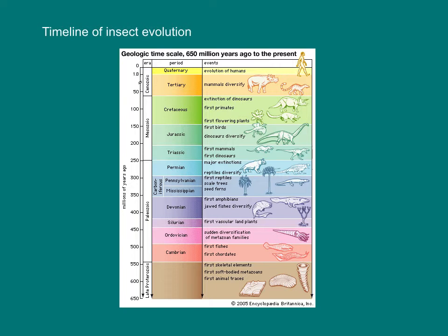Our story begins 650 million years ago when multicellular life first appeared in the fossil record. Insects were not around in this early period of Earth history. Life was entirely restricted to marine habitats up until the Silurian. The first terrestrial plants appeared in the Silurian, and we think some of the first terrestrial multicellular organisms appeared at this time.